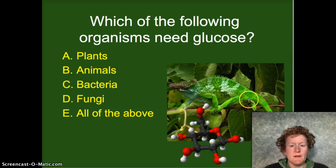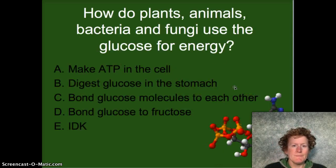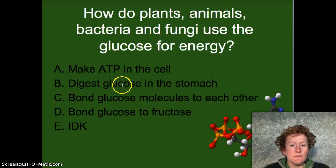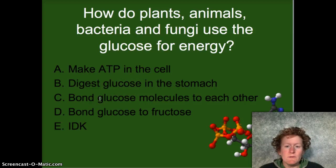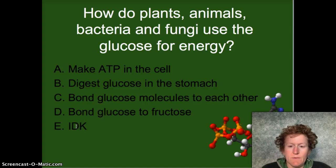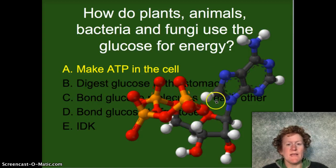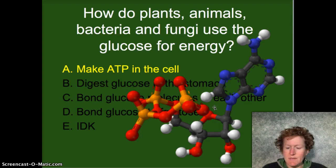This lizard here needs glucose — it's green but it's not a plant. How do plants, animals, bacteria, and fungi use that glucose for energy? Do they make ATP in the cell, digest glucose in the stomach, bond glucose molecules to each other, bond glucose to fructose, or E — I don't know. If you guessed make ATP, you are correct. All plants, animals, bacteria, and fungi make ATP in the cell.